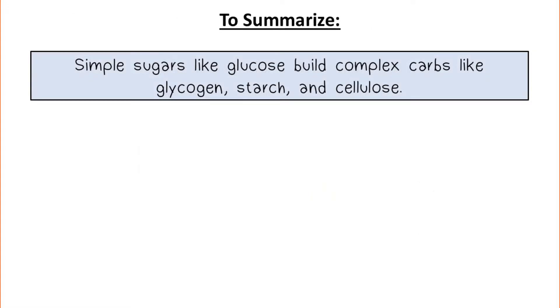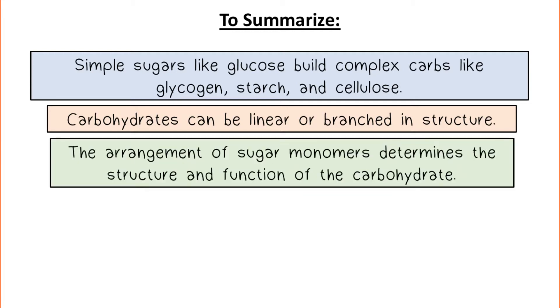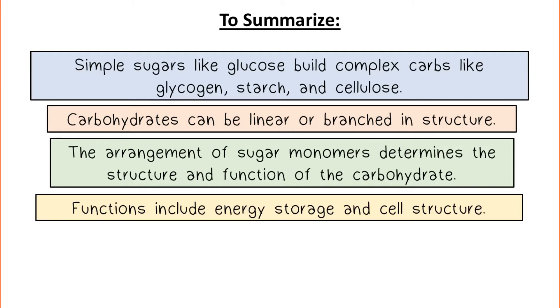To summarize, simple sugars like glucose build complex carbohydrates like glycogen, starch, and cellulose. Carbohydrates can be linear or branched in structure. The arrangement of sugar monomers determines the structure and function of the carbohydrate. Functions include energy storage and cell structure.